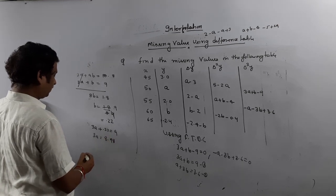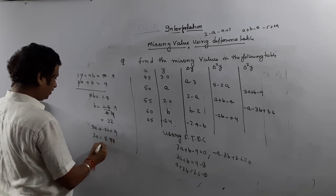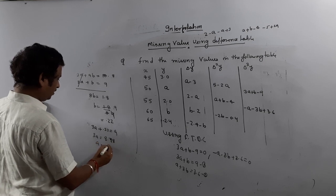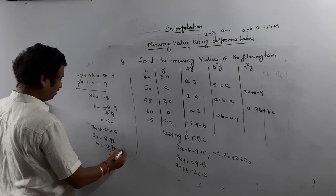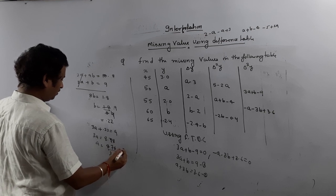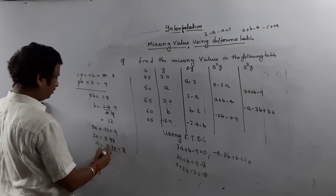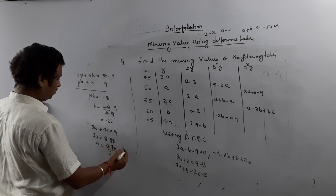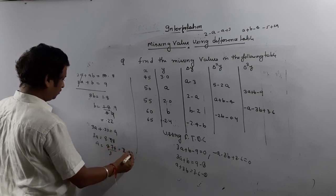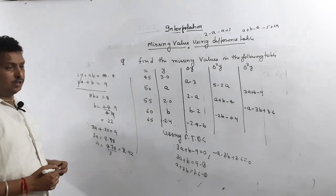Substituting B equals 0.225 back into the first equation: 3A plus 0.225 equals 9, so 3A equals 9 minus 0.225, which is 8.775. Therefore A equals 8.775 divided by 3, giving A approximately equals 2.925. So this is the answer.